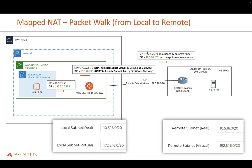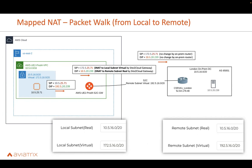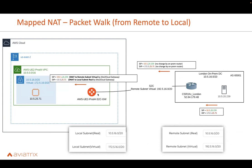There is no change on the on-prem router. The packet goes to the server, which sees it as coming from 172.5. So the server sends the reply from 10.5 back to 172.5. When the return packet goes through the spoke gateway, we again do two things: we change the server's source 10.5.20.239 to 192.5.20.239 (preserving host information), and we change the destination from the virtual IP representing this server back to the real 10.5.25.71.